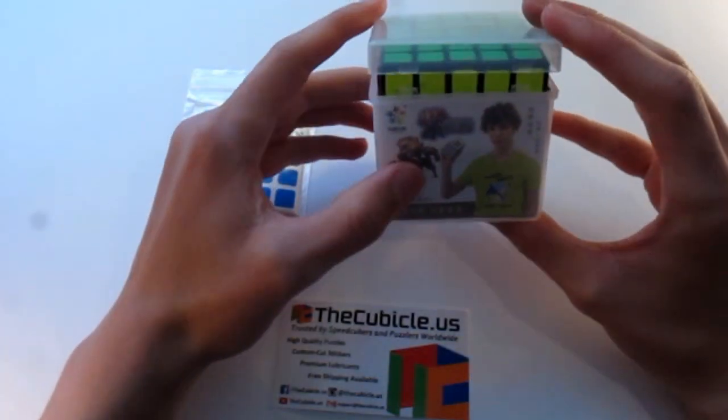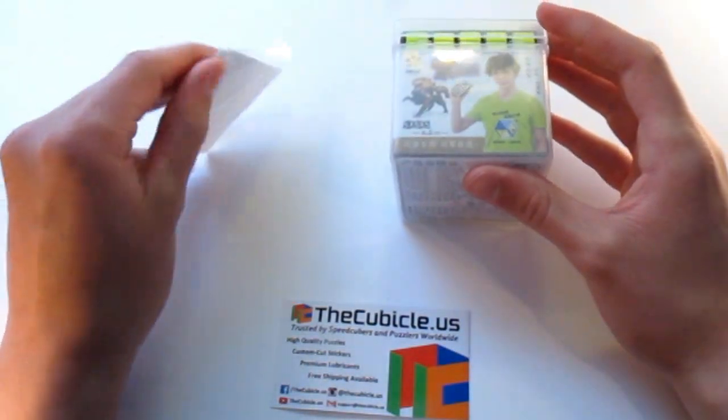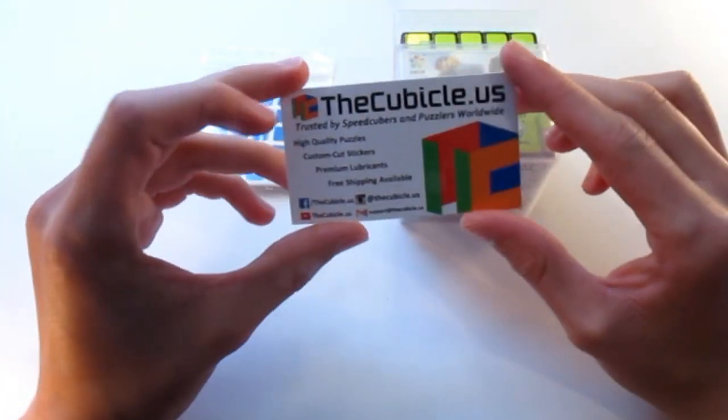Okay, so in this box I had the Yushin 5x5, some replacement stickers, and of course the cubicle business card.